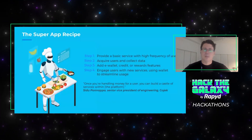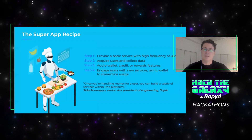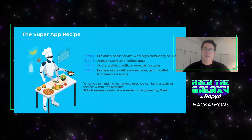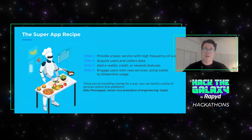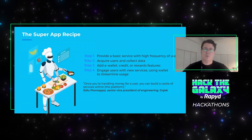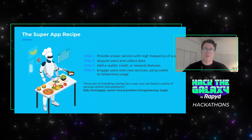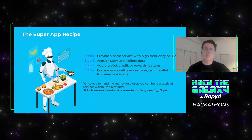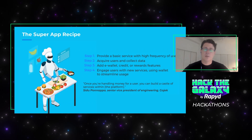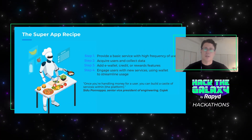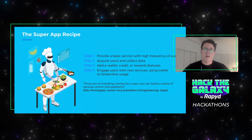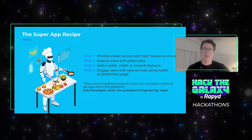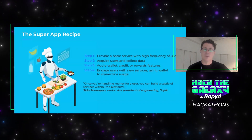What's the recipe? Number one, you want to start with a basic service — a flywheel that has a high frequency of use. You use that to acquire customers and collect more data. You stack in payment capabilities, whether that's a wallet, credit, rewards, or all of the above. Then you use that existing flywheel to keep engaging users with new services you can add on. As a VP at Gojek — a very big application in Indonesia and around Southeast Asia — said: once you're handling money for a user, you can build a castle on top of that ecosystem. That's what we're looking for from you.